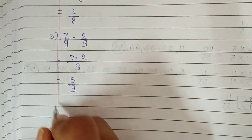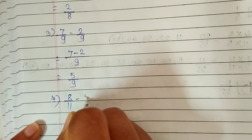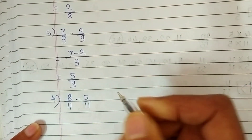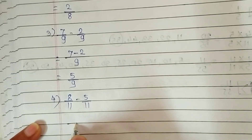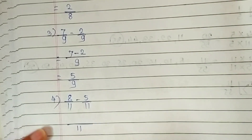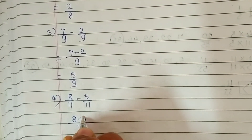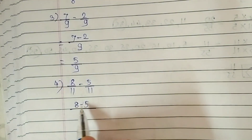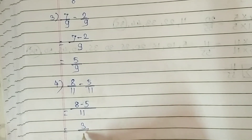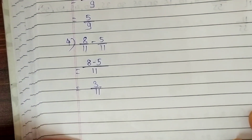The fourth question is 8 upon 11 minus 5 upon 11. Just ignore their denominators and write them as a common denominator, then subtract their numerators. 8 minus 5 gives us 3, so 3 upon 11 is our answer for the fourth question.